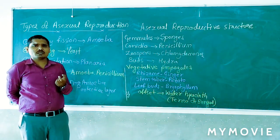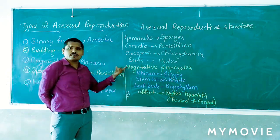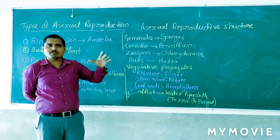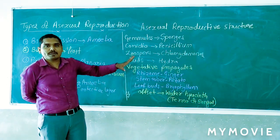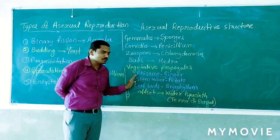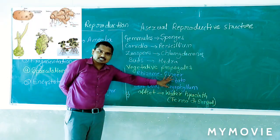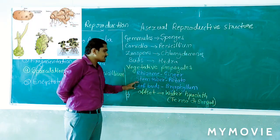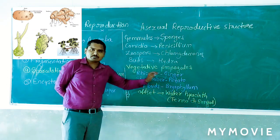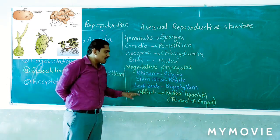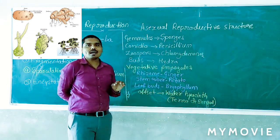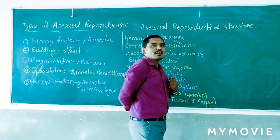If you have confusion remembering what vegetative means — vegetative belongs to plant products. Some common examples of vegetative propagules are: rhizome found in ginger, stem tuber in potato, leaf buds in Bryophyllum, and offset in water hyacinth.